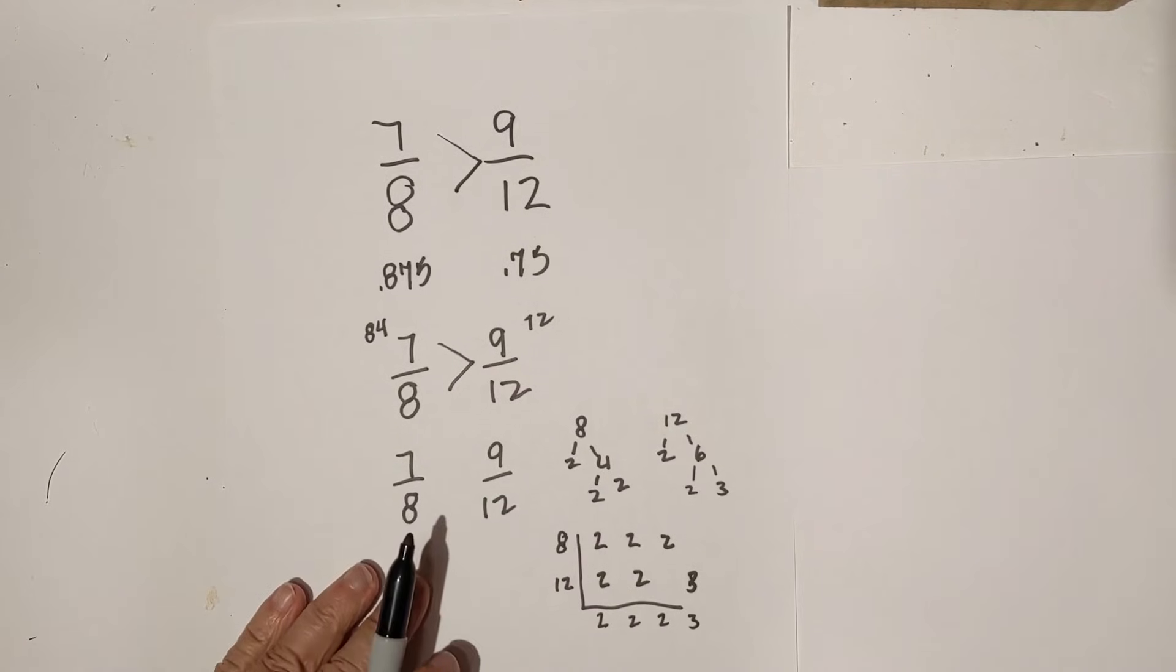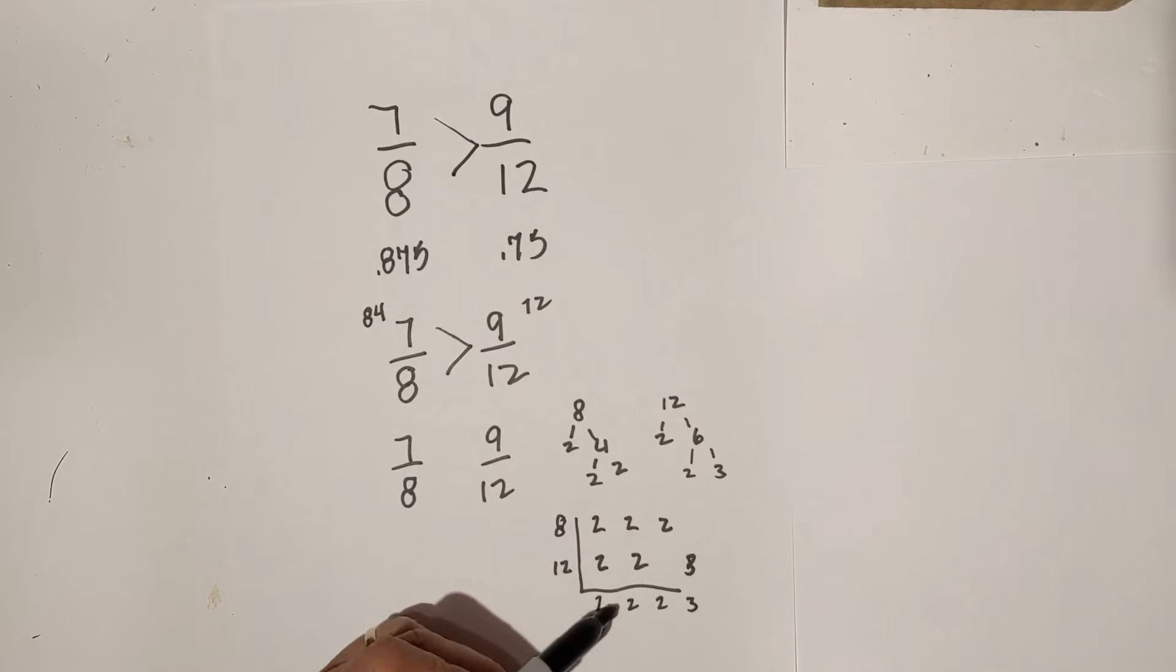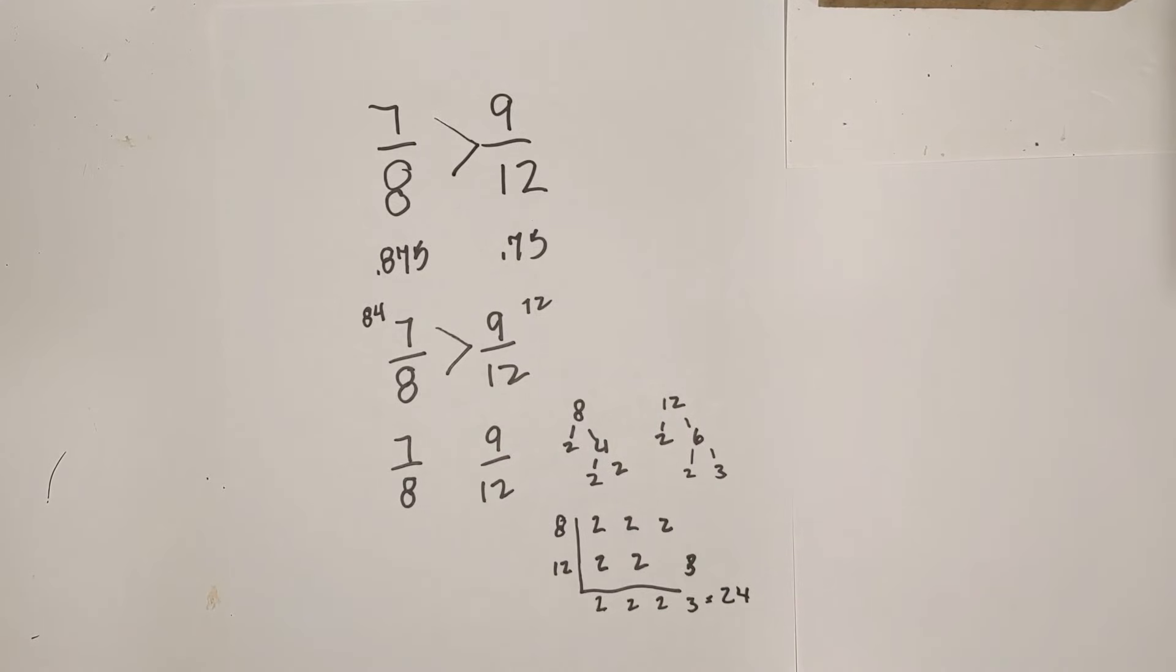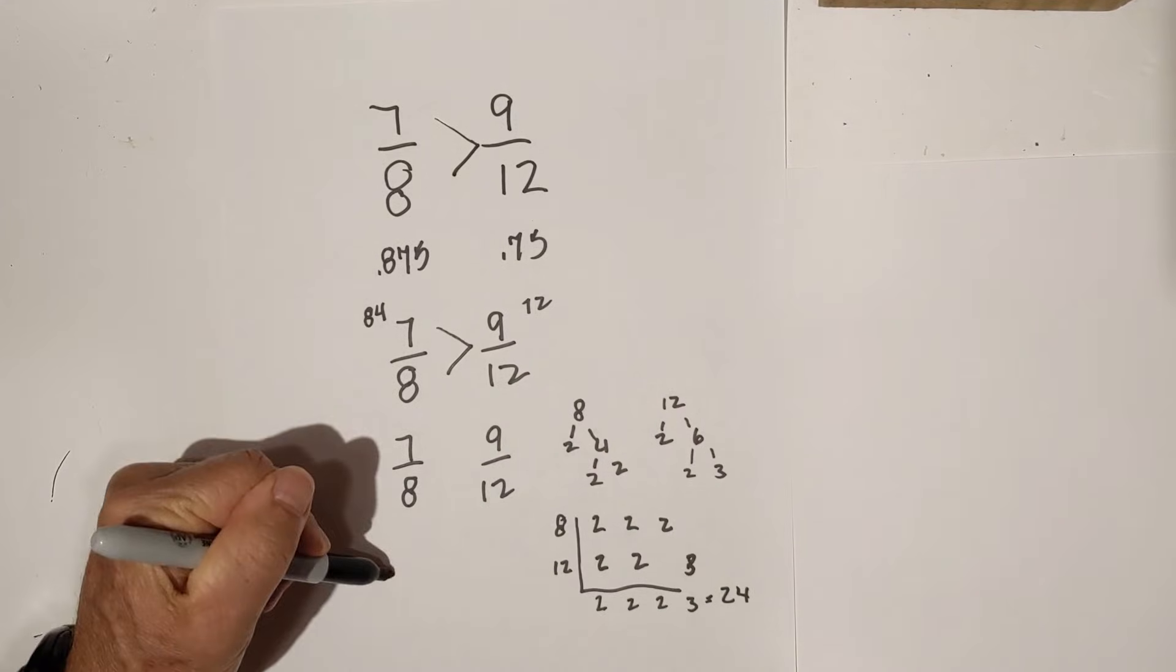So far, so good. Just multiply these. Move it up a little bit. That's 2 times 4, 8, 24. So, now I have the common denominator. So, I'm going to rewrite the fraction.